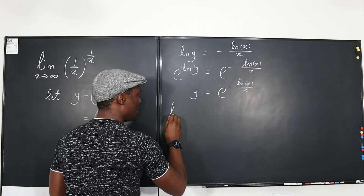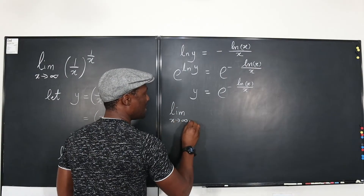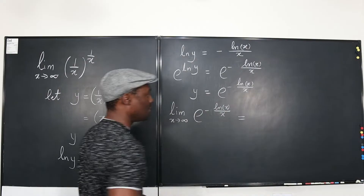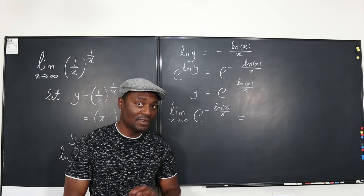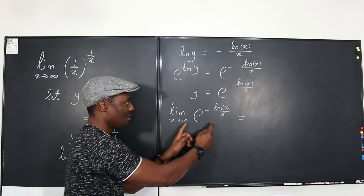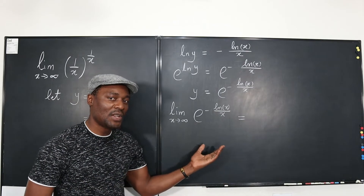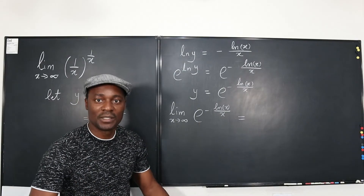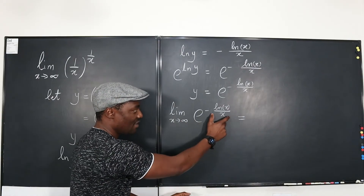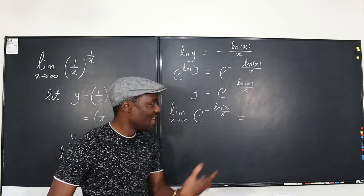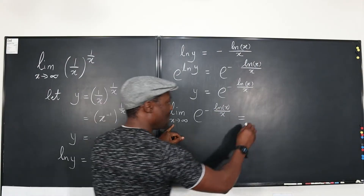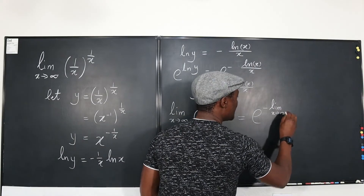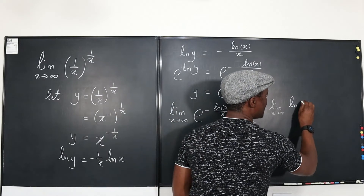Therefore, the limit as x goes to infinity of our expression equals the limit of e to the (-ln(x) / x). Now, the limit of a function is the function of the limit. The function here is an exponential with e as a constant — what's changing is x. So we can move the limit inside the exponent and write this as e to the power of [the limit as x goes to infinity of -ln(x) / x].